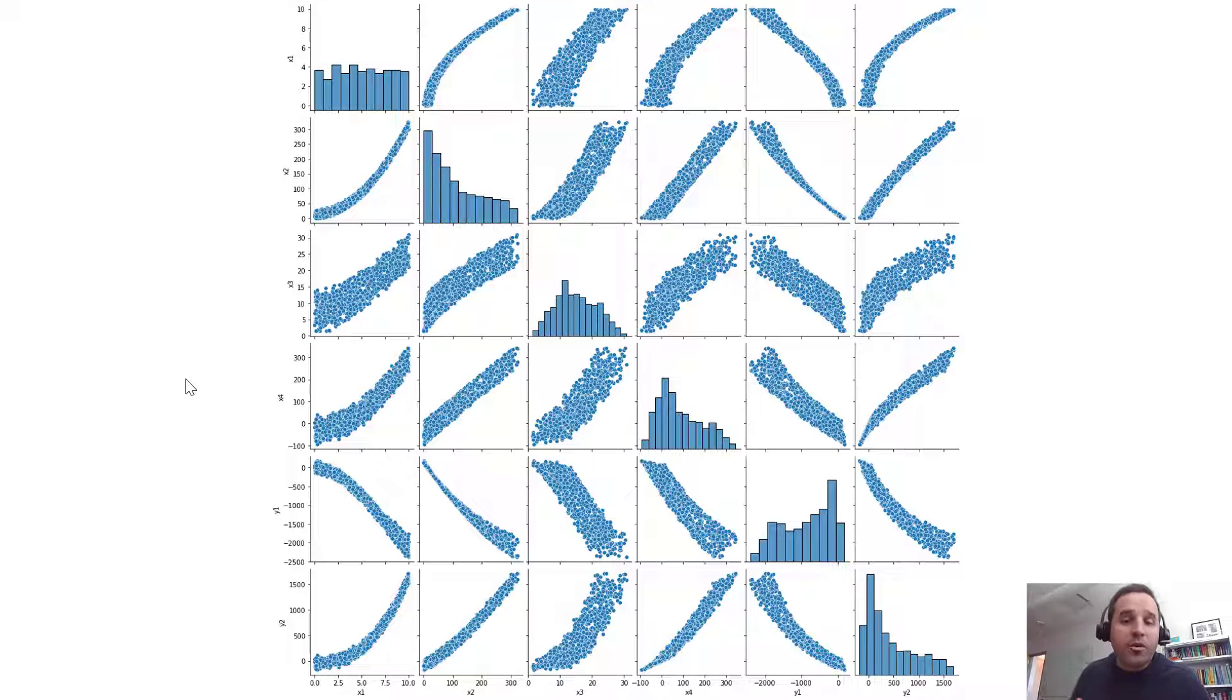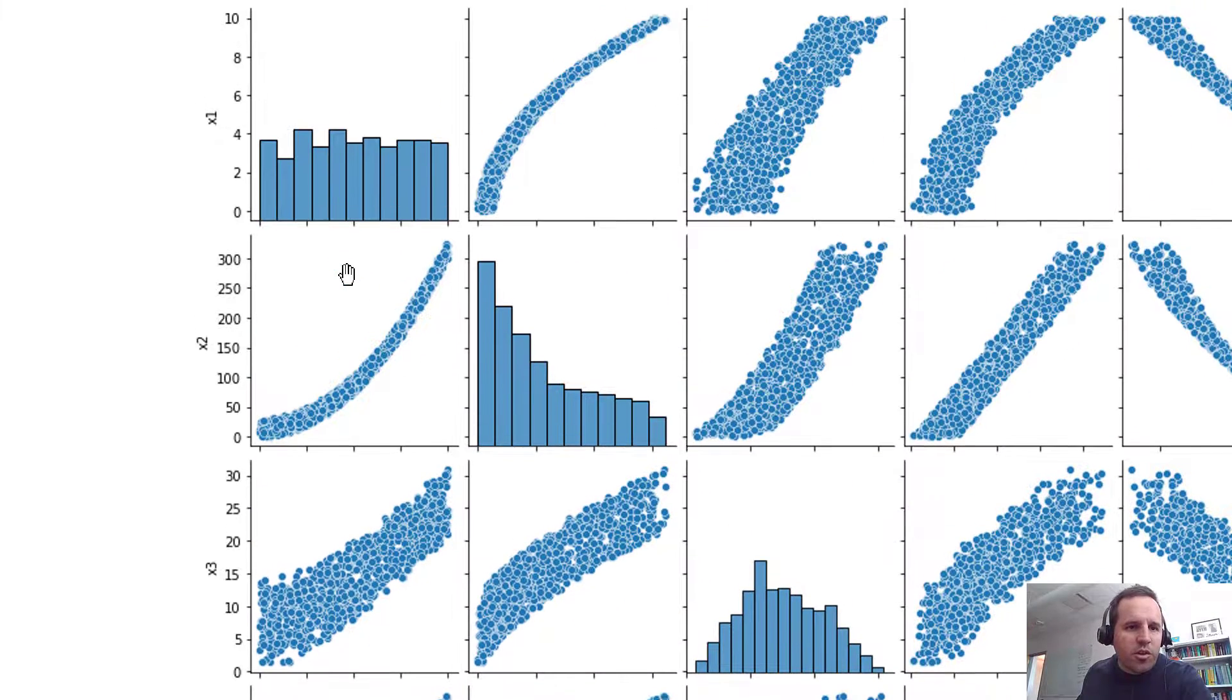Alright so here's how that pair plot looks. Again this is just a really quick, really nice utility. What this pair plot does is it puts all of our variables on the Y axis and also on the X axis. And then it generates a scatter plot capturing every variable and its relationship to all other variables. So I'll zoom in a little bit here and hopefully you can see this a little bit better.